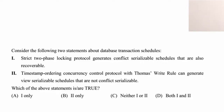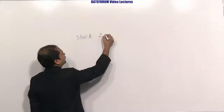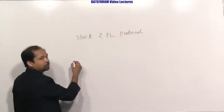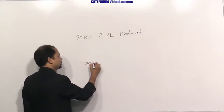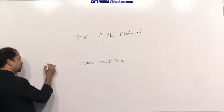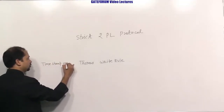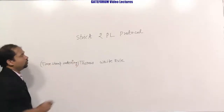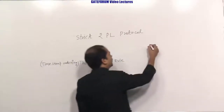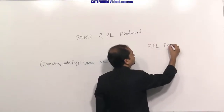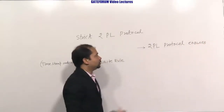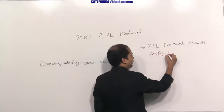There are two terms here: strict two-phase locking protocol (2PL) and Thomas Write Rule, proposed in the timestamp ordering protocol. Two-phase locking protocol always ensures conflict serializability — this is a key feature of the two-phase locking protocol.